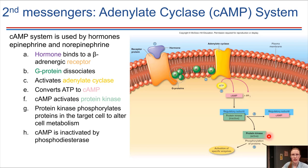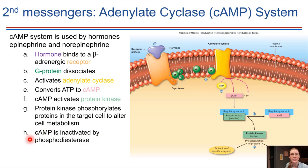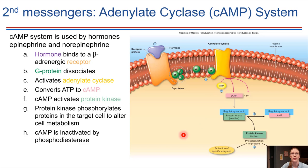There has to be a way to turn off this signal, and that is done by inactivating cAMP using the enzyme phosphodiesterase. As an interesting aside, one of the things caffeine does — whether from coffee, tea, or anything like that — is inhibit phosphodiesterase. So caffeine inhibits the breakdown of cAMP, meaning these signaling pathways stay active longer than they normally would.